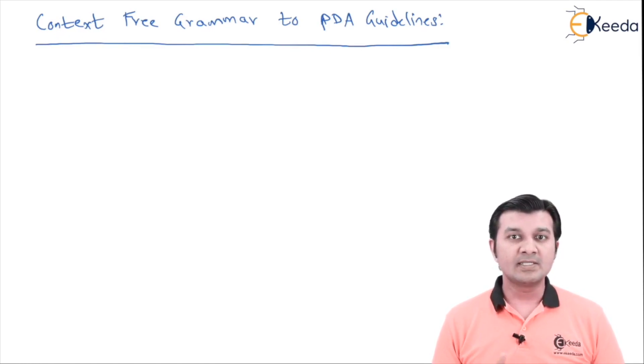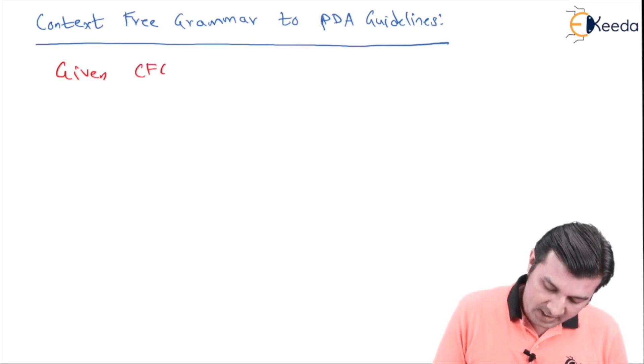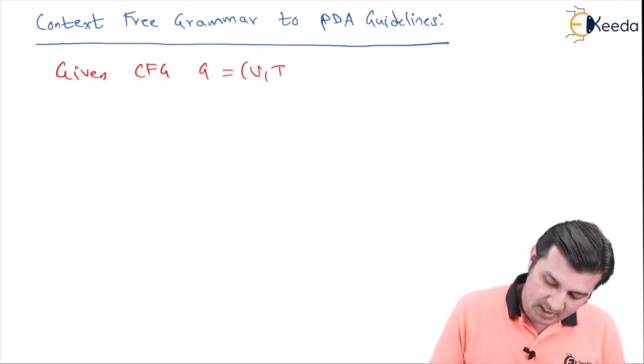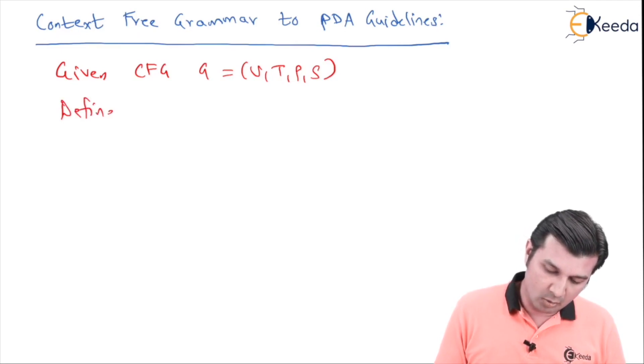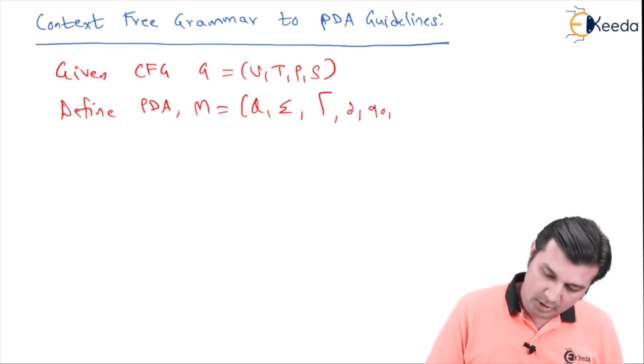So friends, let us discuss the steps as well as a problem on the same in the same video. So over here, we say given context-free grammar G, if we are going to define a PDA which is mathematically represented as M equal to Q, summation, Gamma, del, Q0, Z0, F.